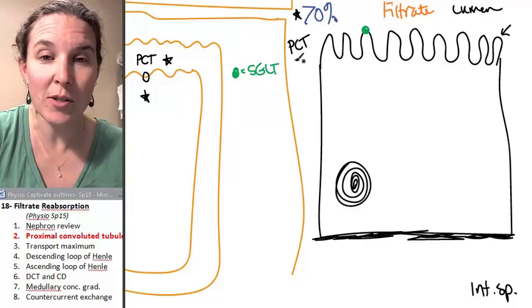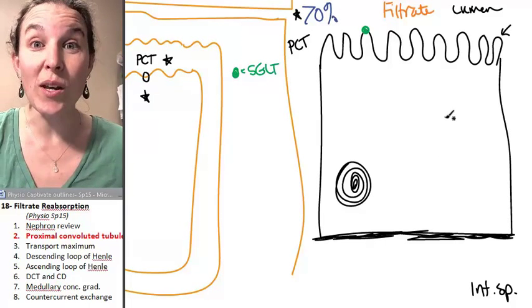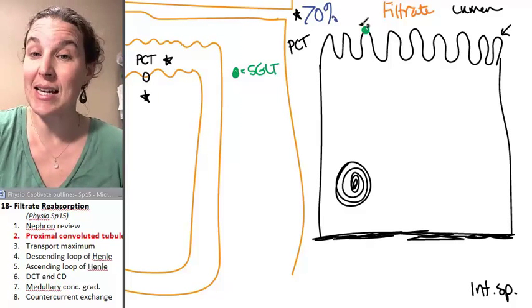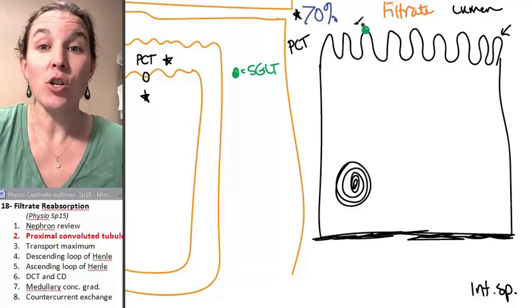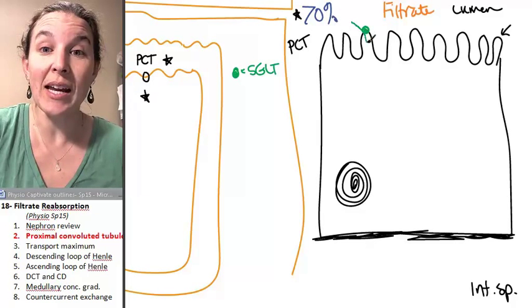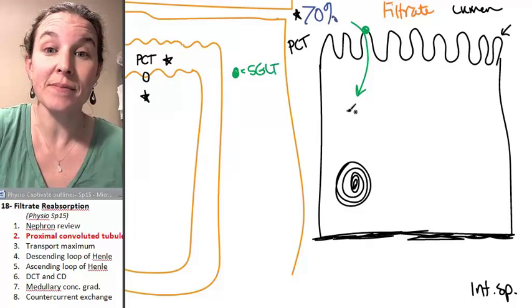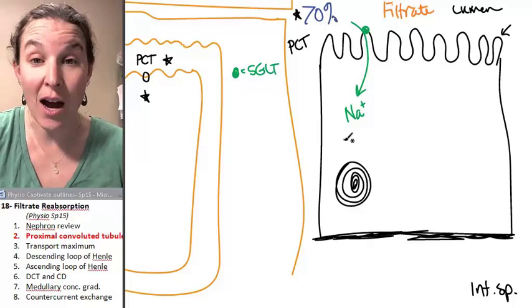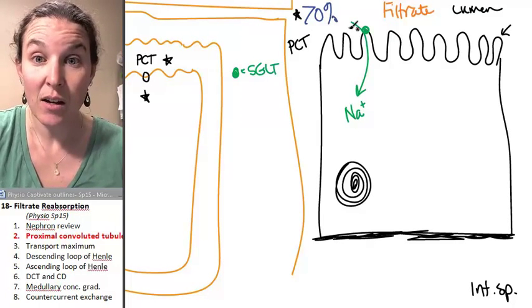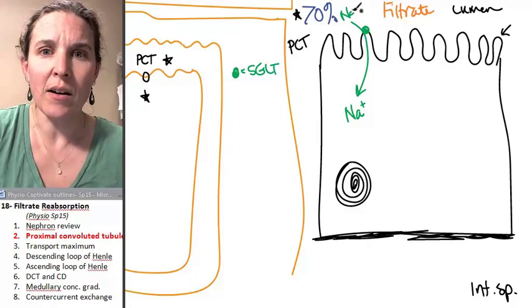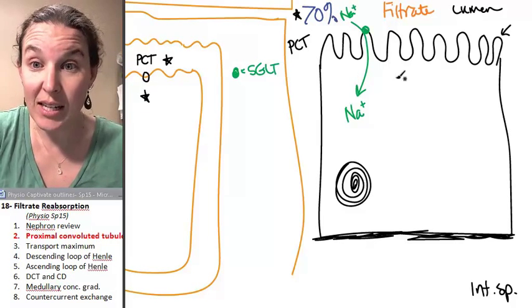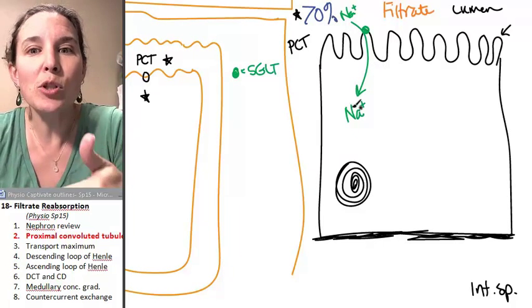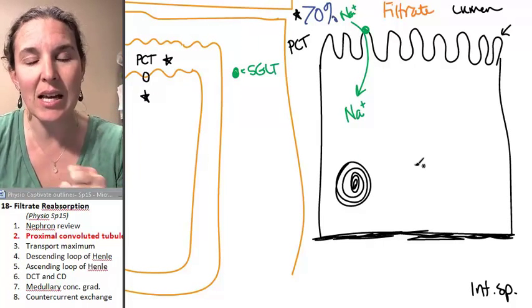This little guy is SGLT. Do you remember SGLT? Sodium glucose transporter. This was an example of a transporter that can bring in sodium. And this sodium actually comes down its concentration gradient. So right here, by putting SGLT in the luminal edge of the cell, we're able to pull sodium into the cell.